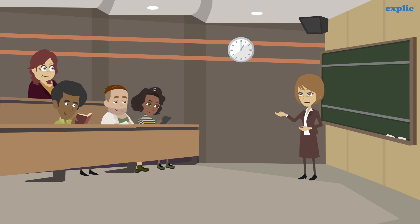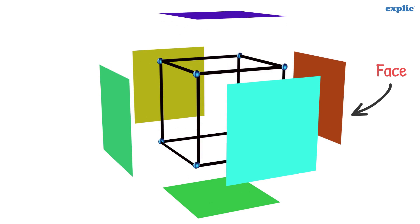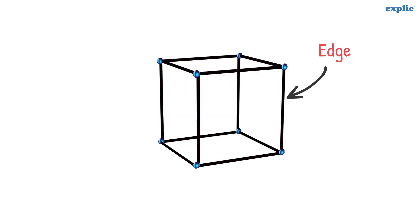We have already learned about different parts of solid shapes. A three-dimensional shape is made of different surfaces, which are called faces or bounding surfaces. The line segment where two faces meet is called edge. The meeting point of three edges is called a vertex. There are eight vertices in a cuboid.